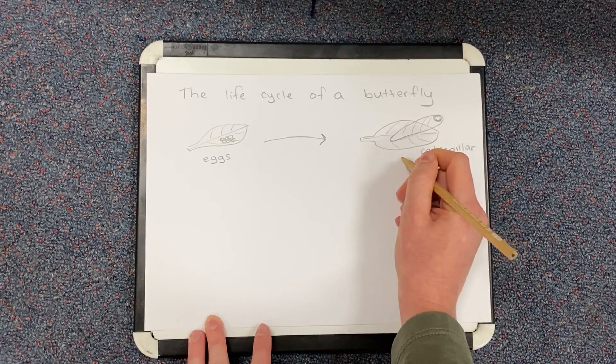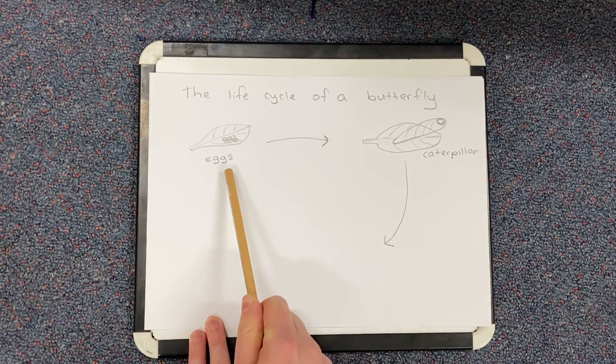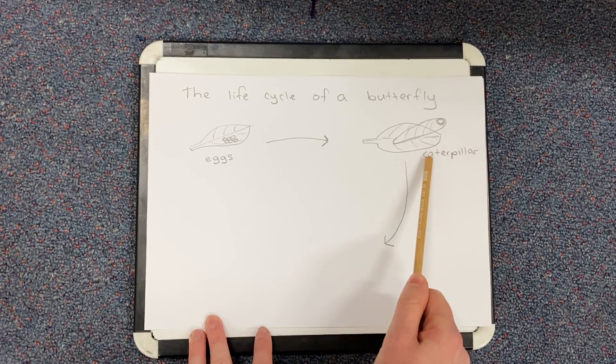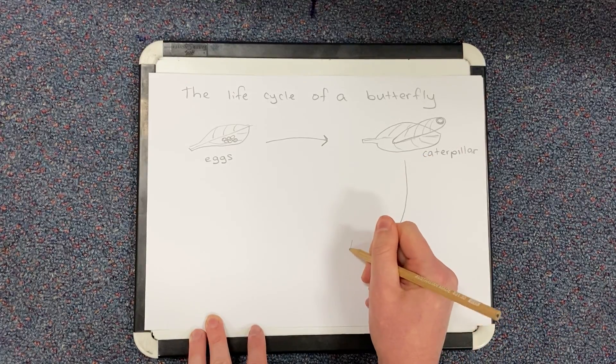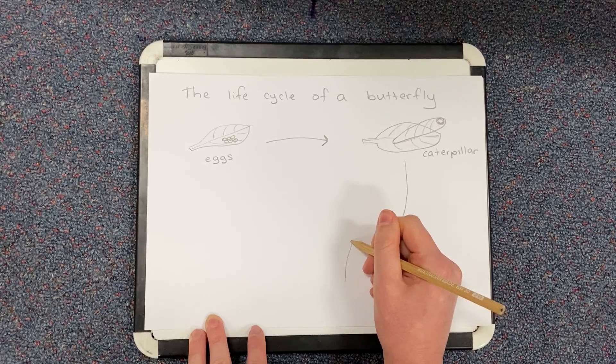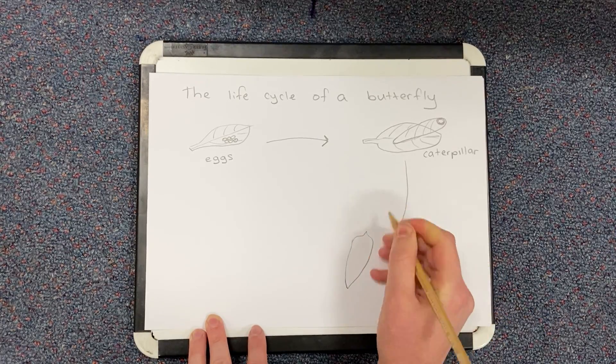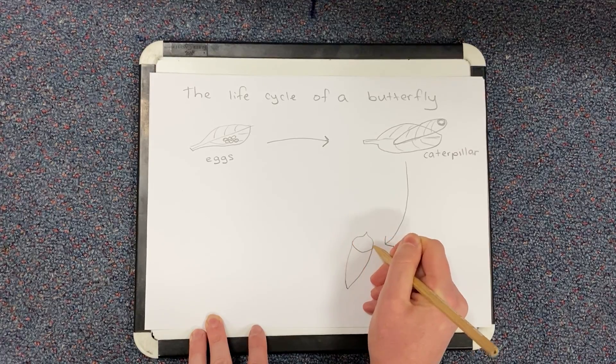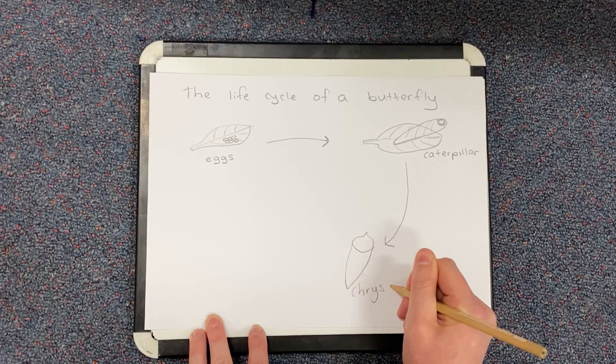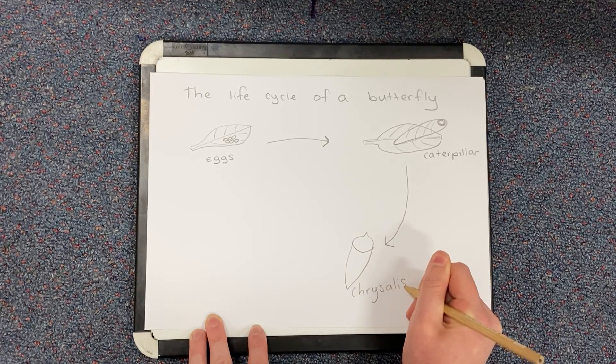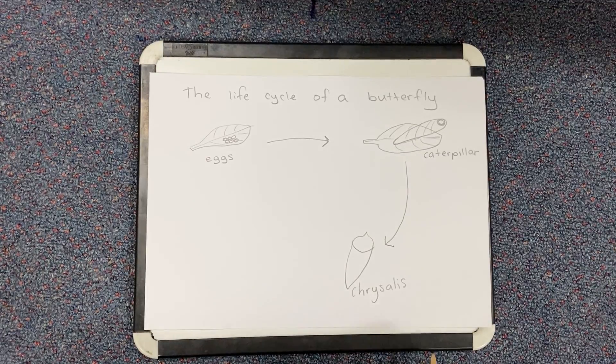Then I need to draw my next arrow. So I have my eggs. My eggs hatch into a caterpillar. And then my caterpillar goes into what's called a chrysalis. And a chrysalis is kind of like a cocoon. It's another name for it. So I'm going to write chrysalis down here. And as you do yours, you might be able to add some beautiful colour into them as well.